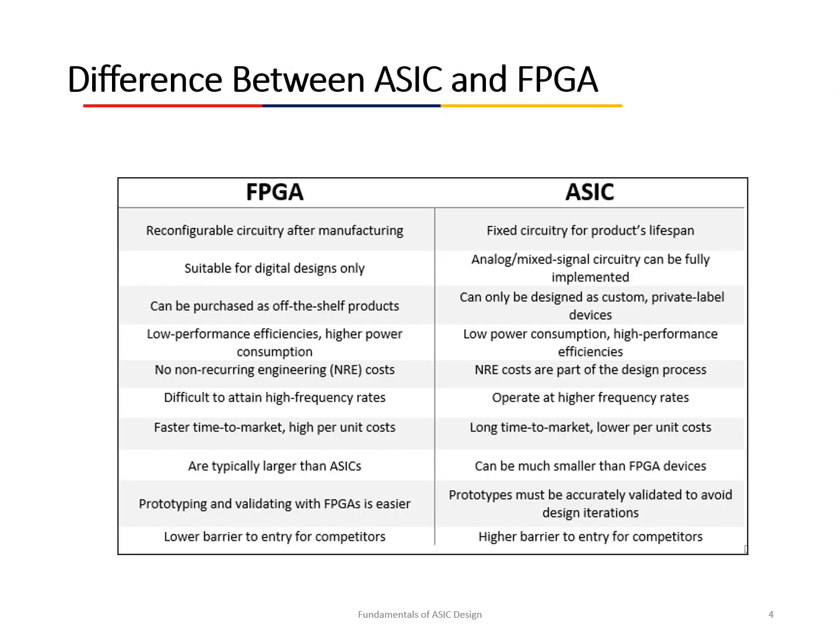The differences between ASIC and FPGA: First, FPGA has reconfigurable circuitry after manufacturing, whereas ASIC has fixed circuitry for its entire lifetime. Second, FPGA is suitable for digital designs only, while ASIC can fully implement analog and mixed-signal circuitry. Third, FPGAs can be purchased as off-the-shelf products, whereas ASICs can only be designed as custom private-label devices. FPGAs have lower performance efficiency and higher power consumption, while ASICs have low power consumption and high performance efficiency.